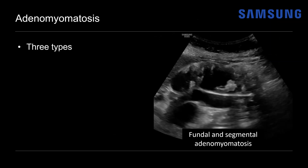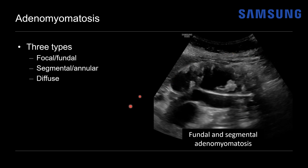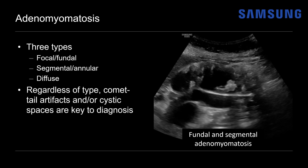There are three types: the focal or fundal type, the segmental or annular type, and the diffuse type where the entire wall is involved. Regardless of the type, we're mainly looking for the comet tail artifact and/or the cystic spaces, which are the key to diagnosis on ultrasound.